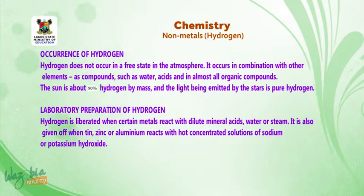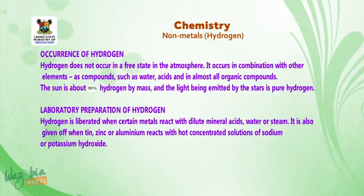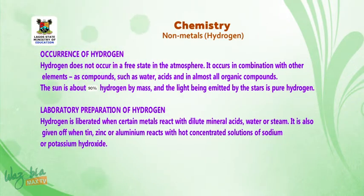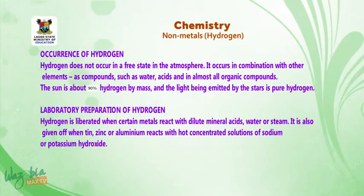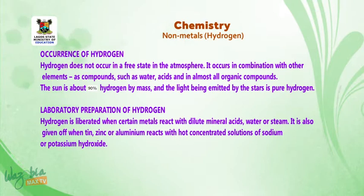Laboratory preparation of hydrogen: Hydrogen is liberated when certain metals react with dilute mineral acids, water or steam. It is also given off when tin, zinc or aluminium reacts with hot concentrated solutions of sodium or potassium hydroxide. After this short break, we are going to look at the three methods commonly used for the preparation of hydrogen in the laboratory.